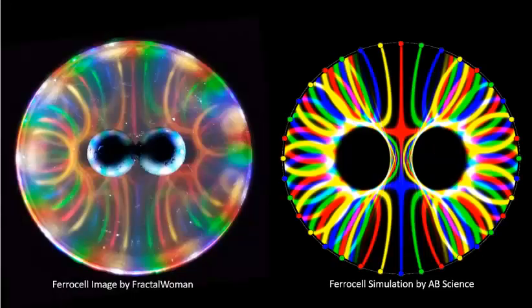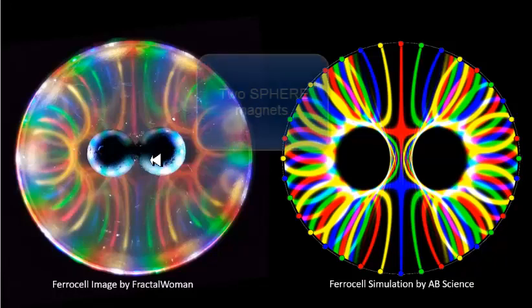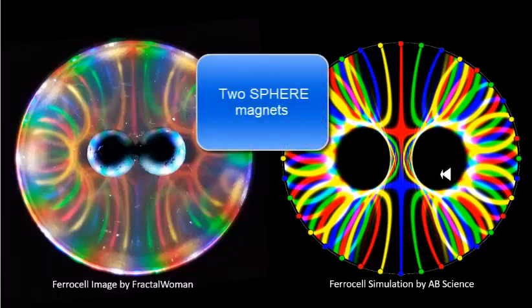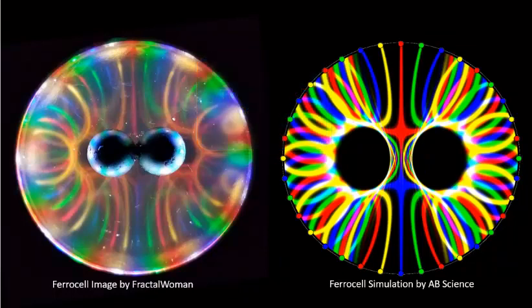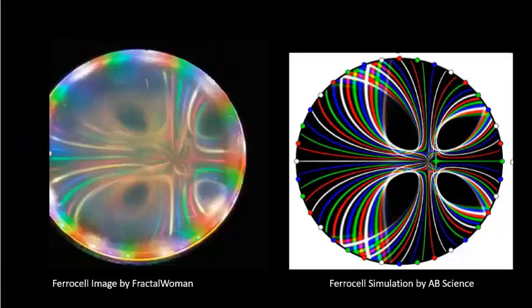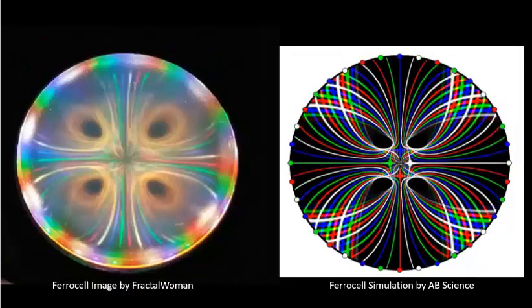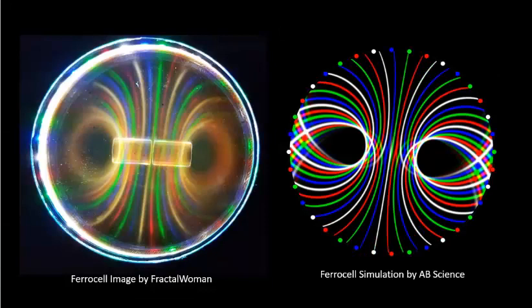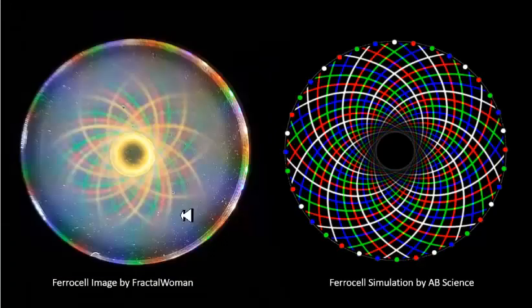Here's one more I'm going to show you with two cylinder magnets next to each other, and here's my simulation. You can see that in various configurations and situations, magnets in different orientations, we are getting very good results—extremely good results, in my opinion, of what we see in the FerroCell.